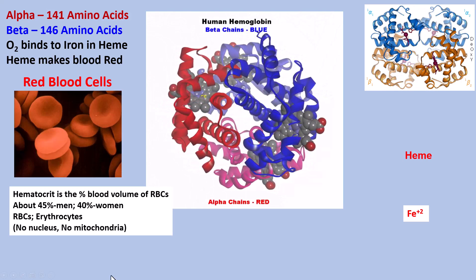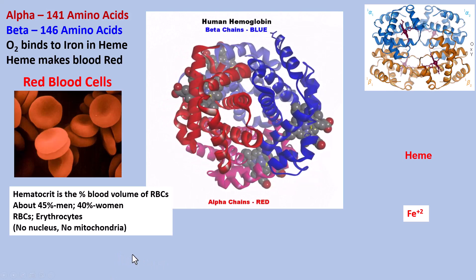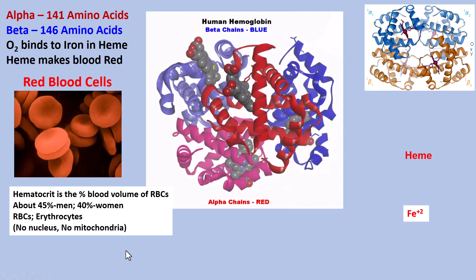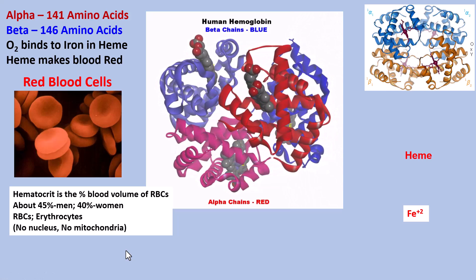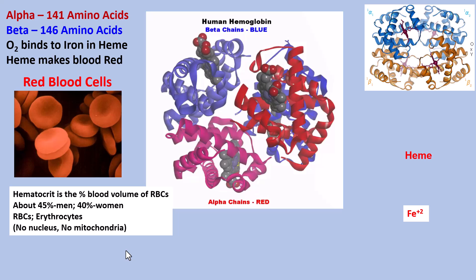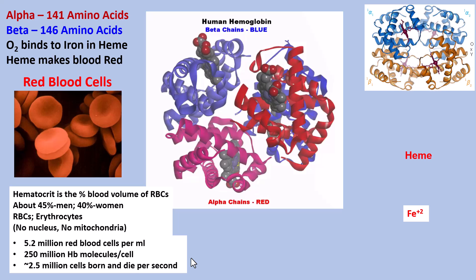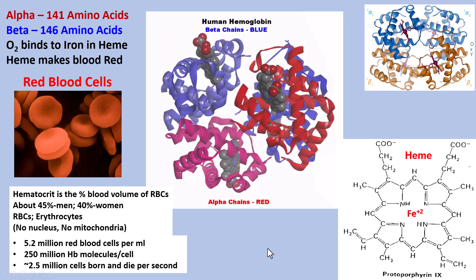Red blood cells account for our hematocrit, which is 45% of the blood for men and 40% for women. Red blood cells are also called erythrocytes. They don't have a nucleus or mitochondria — they're essentially bags of hemoglobin. There are 5.2 million red blood cells per milliliter of blood, 250 million hemoglobin molecules per cell, and about 2.5 million cells are made and destroyed every second.